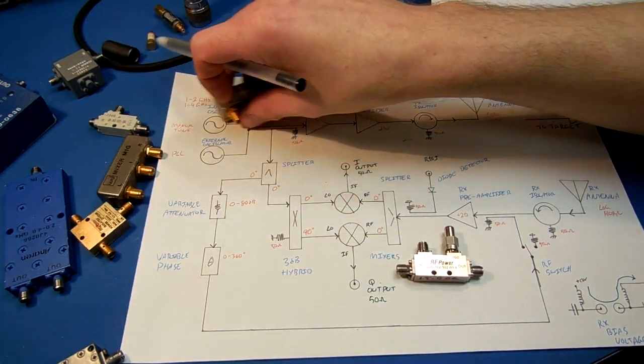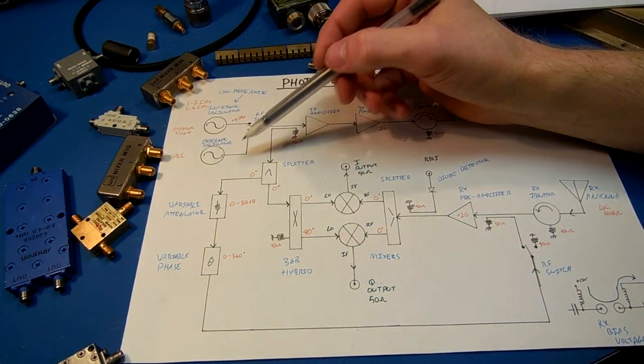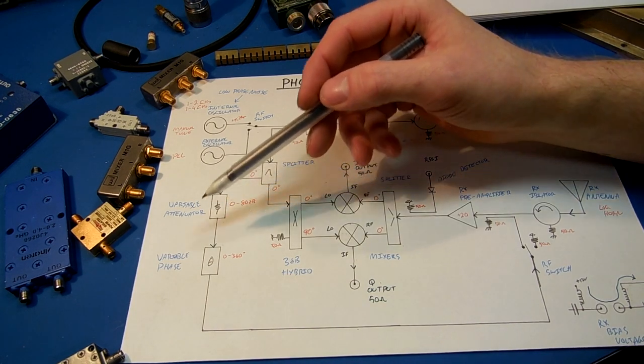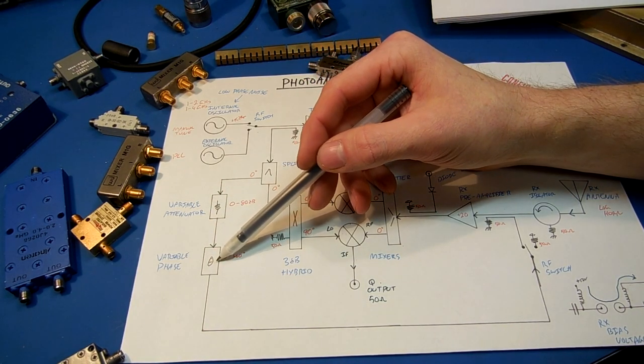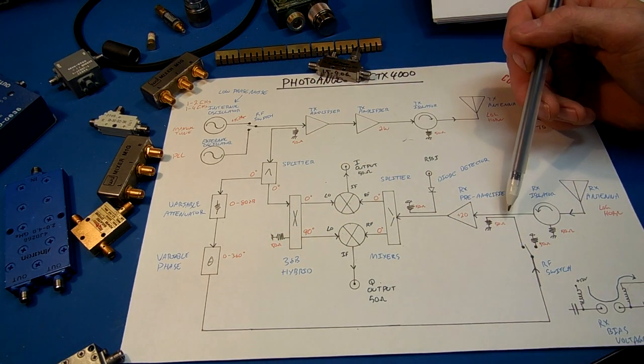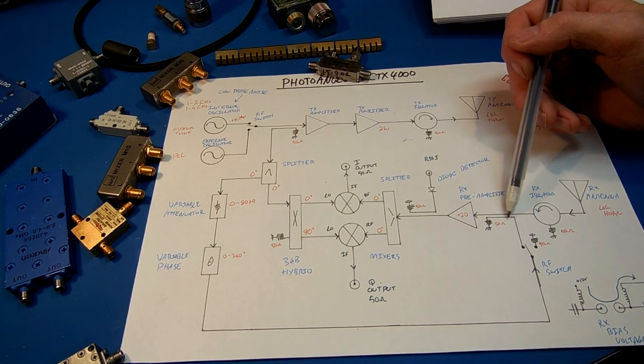Remember, we had a sample of our transmitted carrier attenuated down to basically the received power level. We're gonna shift the phase 180 degrees. We're feeding that back into our receive port, and they're gonna be canceled. The static RF carrier will be canceled.